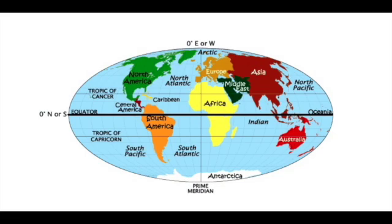One thing both globes and maps show are hemispheres. A hemisphere is half of Earth. These halves are divided by the equator and the prime meridian. The equator divides Earth into the northern and southern hemispheres. The prime meridian and the international dateline divide Earth into the eastern and western hemispheres.